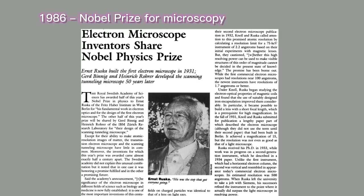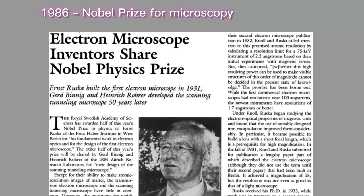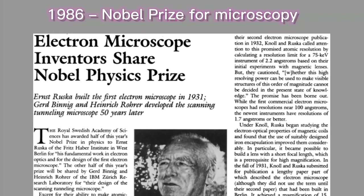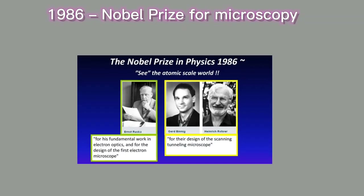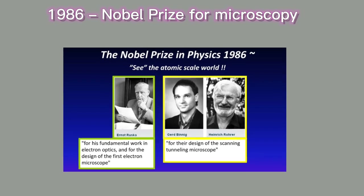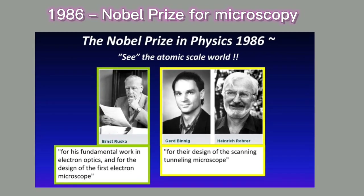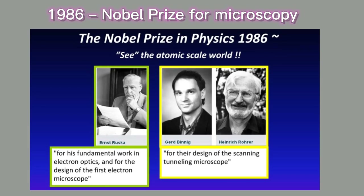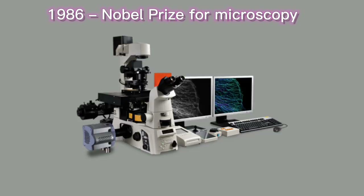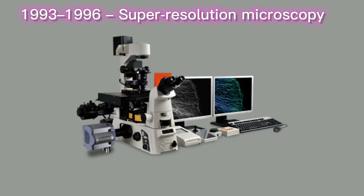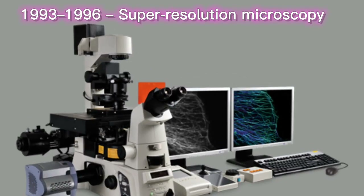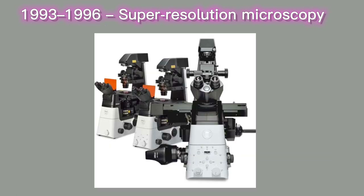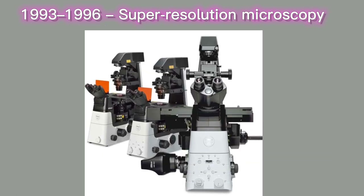In 1986, the Nobel Prize in Physics was awarded jointly to Ernst Ruska and to Gerd Binnig and Heinrich Rohrer for their work on the scanning tunneling microscope. This was followed in 1993–1996 by advances in super-resolution microscopy.